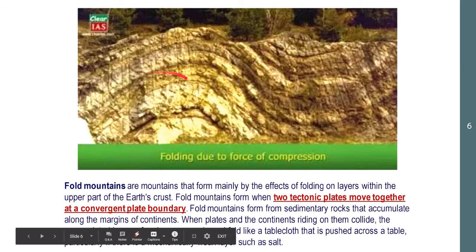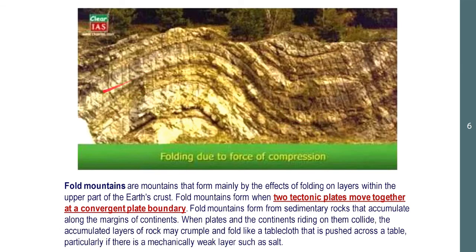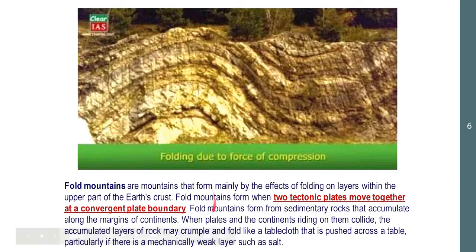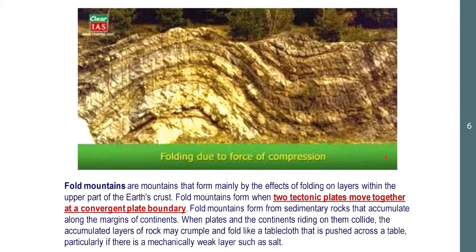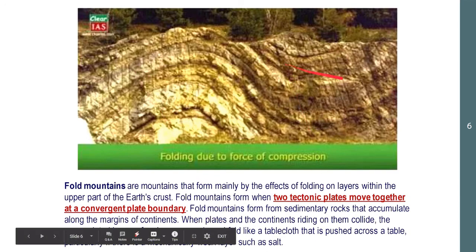As you can see, this layer of rock used to be a straight line, but because of forces of compression coming from both ends, it's starting to bend. Eventually this segment will rise up and become a fold mountain. Fold mountains form from sedimentary rocks that accumulate along the margins of continents. When plates and continents collide, this can result in crumpling of the rock layer.